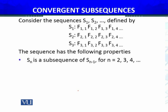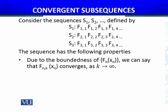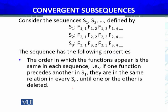The sequences have the following properties: (1) Sn is a subsequence of Sn-1 for all n = 2, 3, 4, .... (2) Due to the boundedness of {Fn(xn)}, since the sequence of functions given is pointwise bounded, we can say that {Fn,k(xn)} converges as k approaches infinity. Of course, this is true.